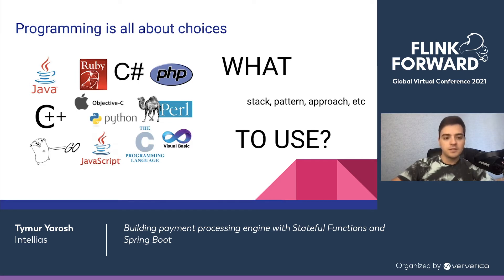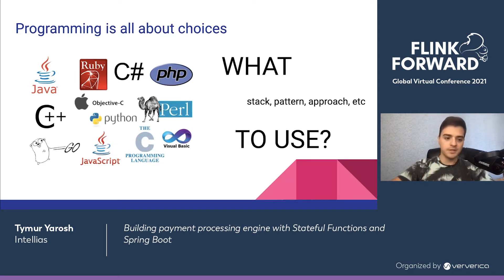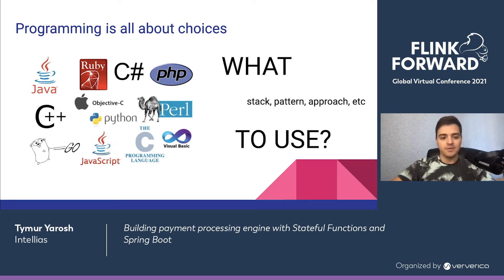For instance: how to design a function? Should we use embedded SDK or a remote one? How to design a namespace? How to make requests to external services idempotent? How to query data? How to integrate Stateful Functions with your favorite framework? Correct decisions can make the application incredibly easy to build and maintain, while incorrect ones can destroy everything. Though there are no ultimately good or bad decisions — there are just trade-offs, and it's your job to choose the best one for your individual case.